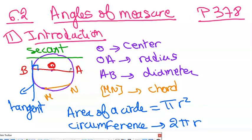We name OA as a radius. The segment that joins the center of the circle with any point on the circle is called the radius. If I make it longer, from one side to another side, passing through the origin, any segment that has two points on the circle and passes through the origin is called a diameter.